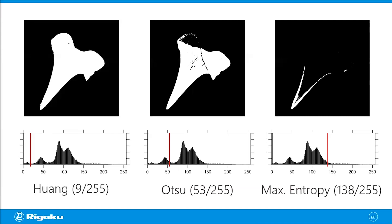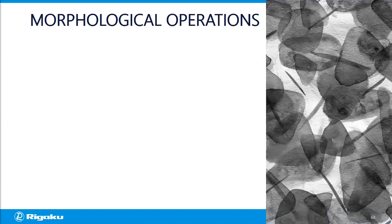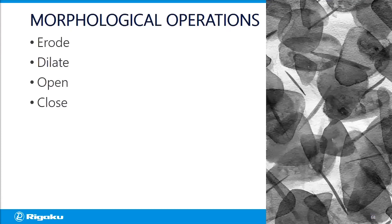Whatever method you use to set the threshold, you'll have the objects segmented from the background. When you look at the result and like it, you can move on. But often you'll look at the segmentation and think the objects are a little too big, too small, too connected, or too separated. Then you'd have to do some optimization or cleanup, and one of the things you can do is use morphological operations. Basic operations include erode, dilate, open, and close.